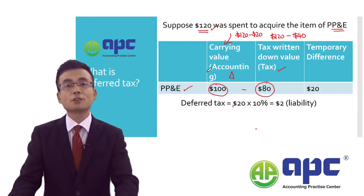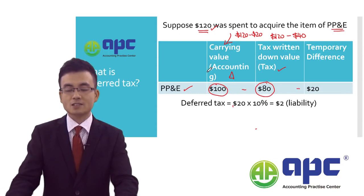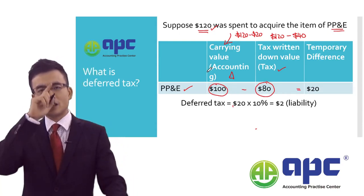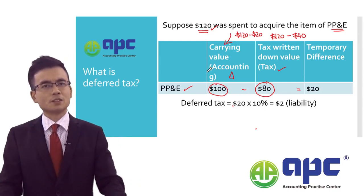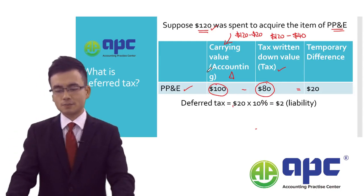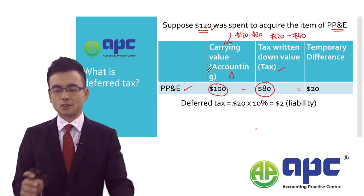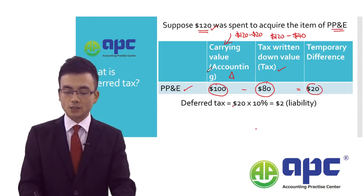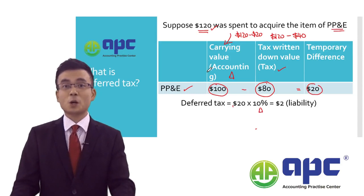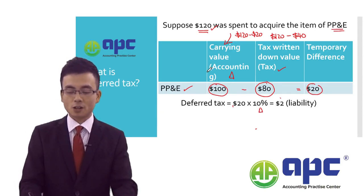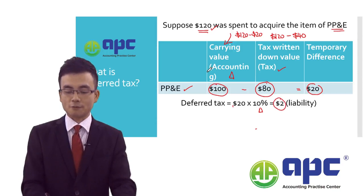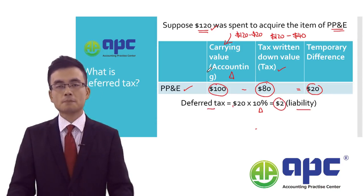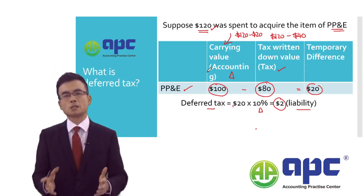As you can see, there's a difference here — we call it the temporary difference. In technical terms, it's called the taxable temporary difference, because we have to tax it. We take that $20 of temporary difference and multiply by the current corporate income tax rate of 10%, and that gives rise to $2 of deferred tax liability.